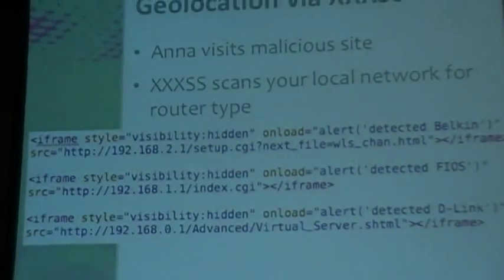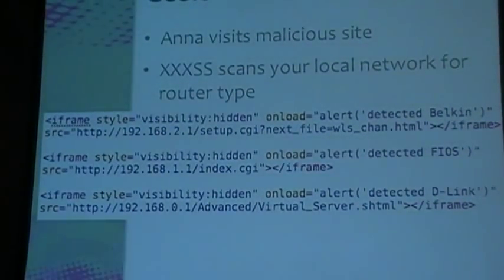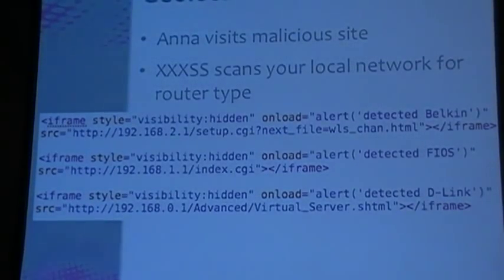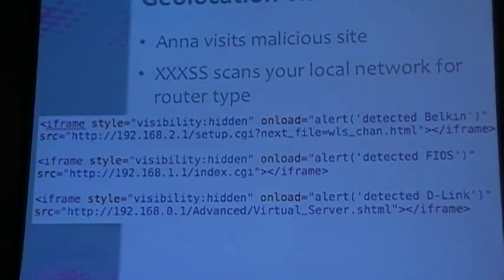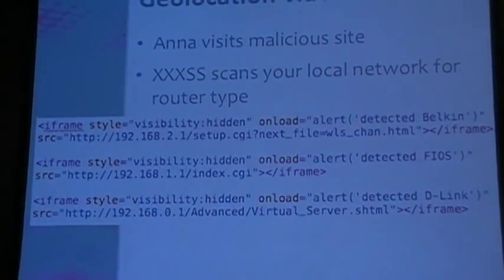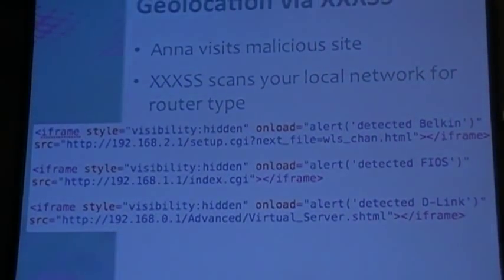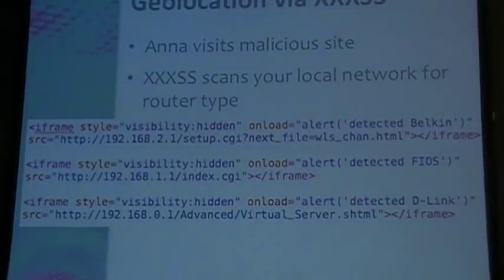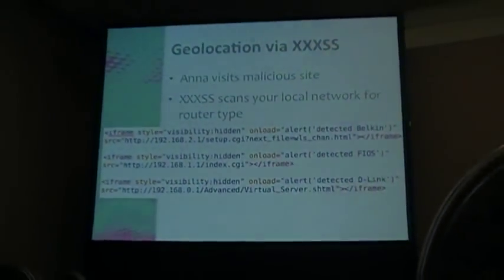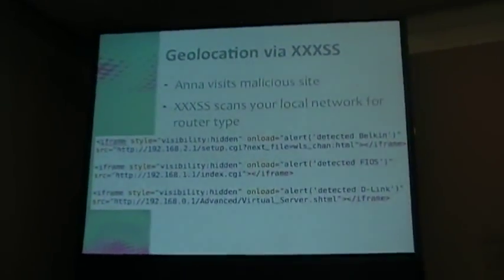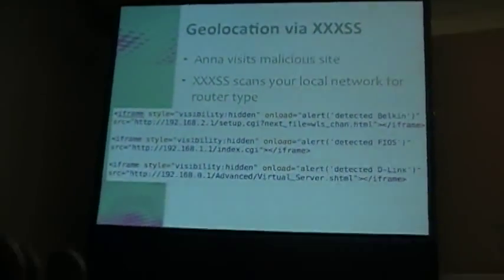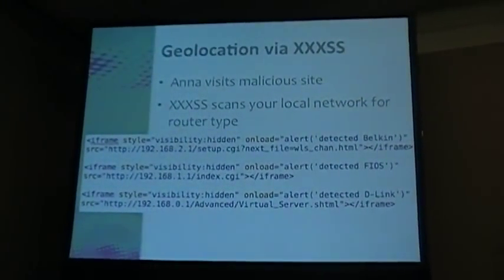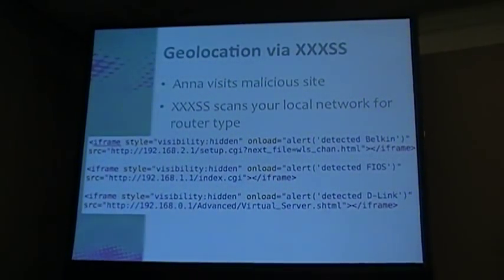I'm hitting setup.cgi and I do an onload. What this says is: if your browser, Anna, can hit this URL, that means you probably have a Linksys router. If you can't hit that, you'll never get my onload JavaScript. What if I can hit a different 192.168.x.x CGI address? You can probably detect a different router brand. The list goes on — you can basically detect any HTTP-based router.